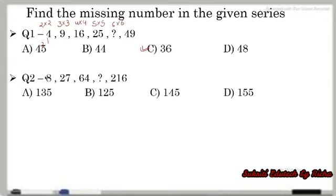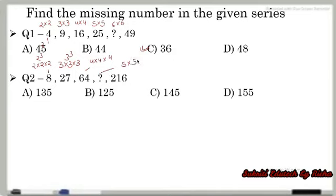In the next question, we need to find which common pattern is followed. When we multiply 2 three times we get 8. When we multiply 3 three times we get 27. And 4 multiplied three times gives 64. The next number is 5, and when we multiply 5 three times we get 125. So 125 is the right answer for this question.